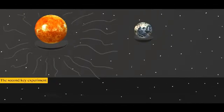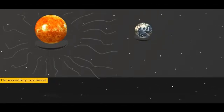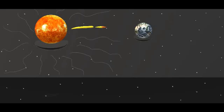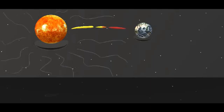The second key experiment is the effect of gravity on the frequency of a light beam. When a ray of light emitted by the sun moves away from it, gravity must slow it down and cause it to lose energy. So the frequency of yellow sunlight will decrease, and the ray moving away from the gravitational attraction of the sun will become redder. In other words, it will create a redshift.